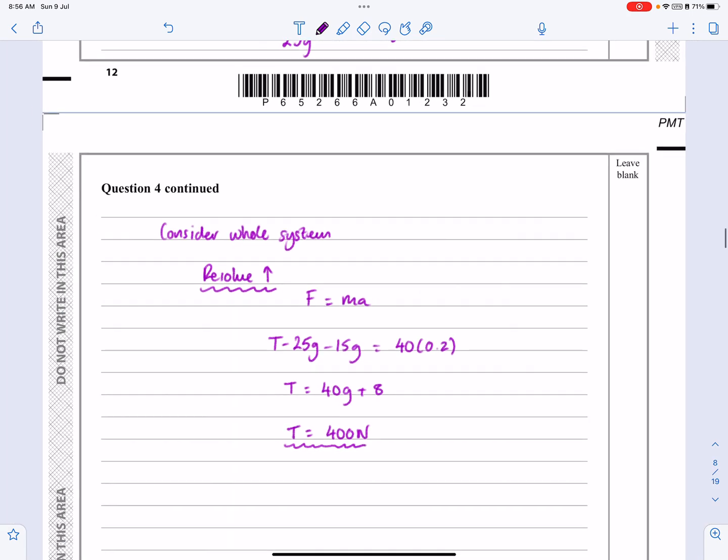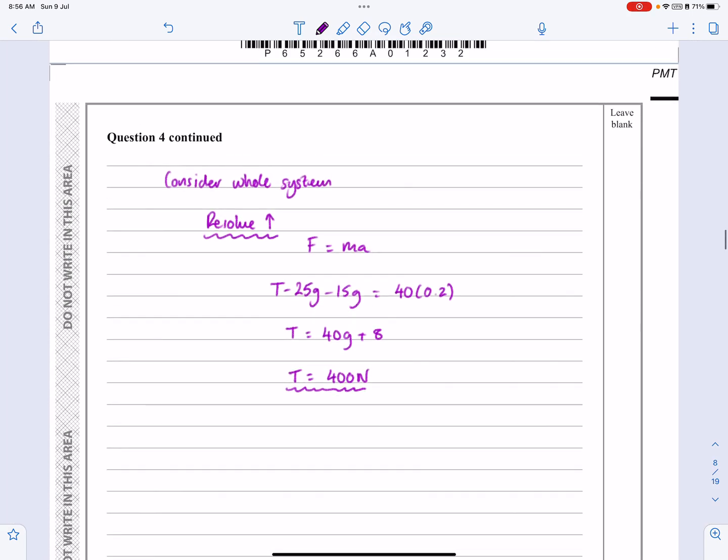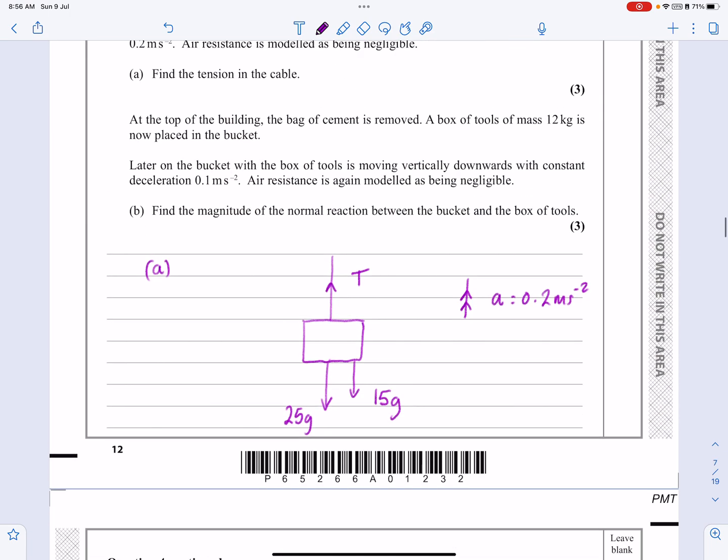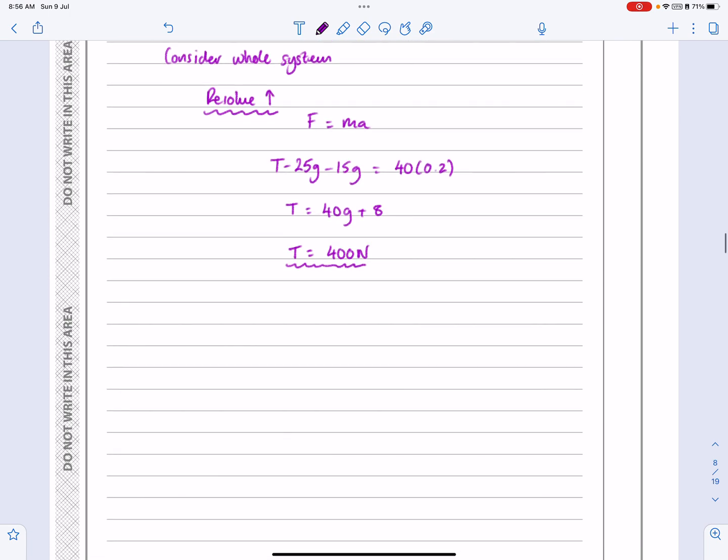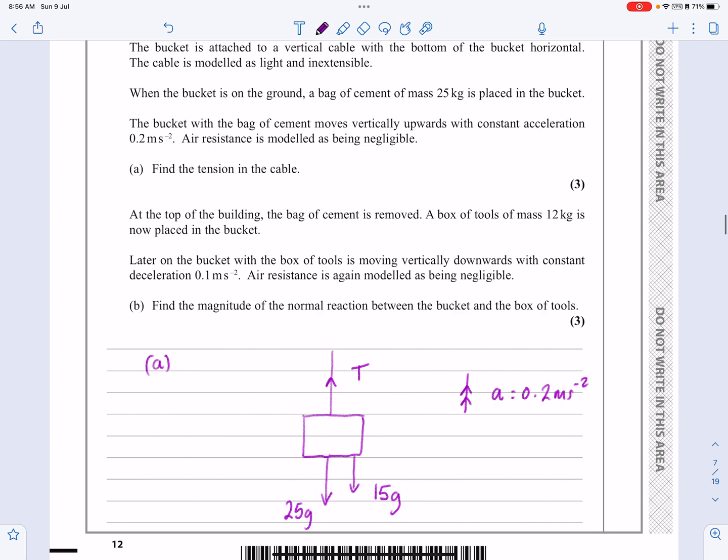And remember, because of G, we do it to two significant figures as and when necessary. Right, this second part is going to be the nasty part. But let's just have a look at it. So first of all, let's look at what the question says. So the question says, cement's taken out.